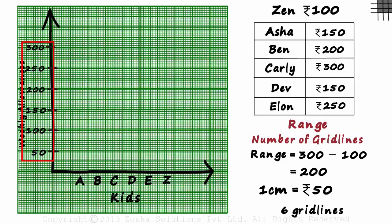This range, as we can see, has covered all the data points and it also fits into a graph perfectly. Asha gets a weekly allowance of 150 rupees. It means we need to draw a bar up to this height. So we draw a bar like this. This bar represents Asha's weekly allowance.